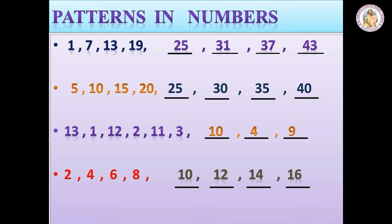Next sum is thirteen, one, twelve, two, eleven, three. What comes next? Three numbers. See the difference of numbers. See the alternative numbers.